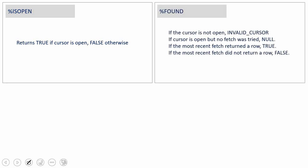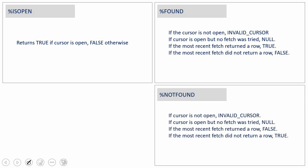FOUND and NOT FOUND, if used before opening the cursor or after closing it, will throw an exception called INVALID CURSOR. These two attributes must be used only between the open and close lines. FOUND returns true when the last fetch is successful, and NOT FOUND returns true when the last fetch is unsuccessful. We use them to know whether the cursor has reached the end of its data.